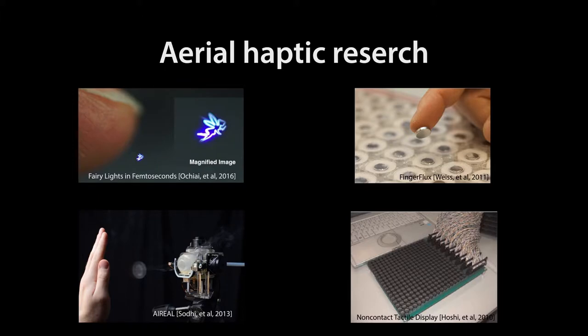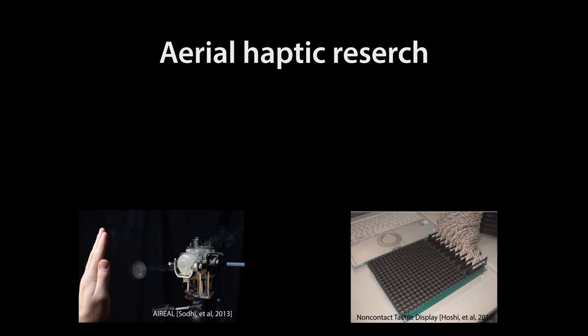In conventional aerial haptics research, a single physical quantity such as focused ultrasound, aerodynamic vortex, laser-induced plasma, or magnetic force and magnet is used to render haptic texture.